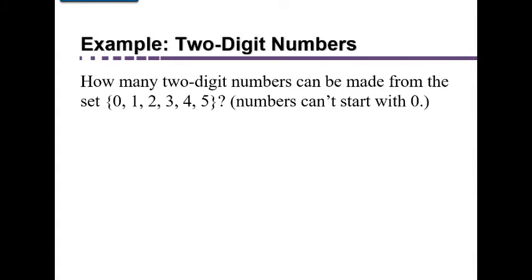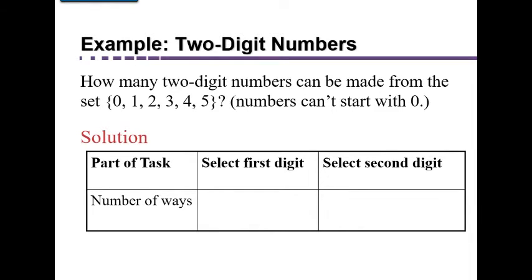As an example: how many two-digit numbers can be made from the set {0, 1, 2, 3, 4, 5}? Keep in mind that we never start a number with zero. We break the task into two parts: selecting the first digit and selecting the second digit. Since zero can't be used as the first digit, we can use 1, 2, 3, 4, or 5 — so there are five options for the first digit.